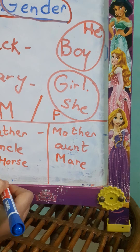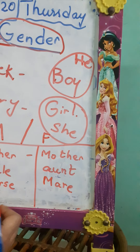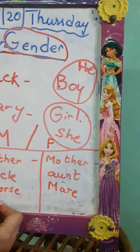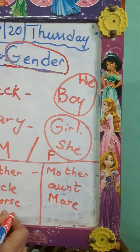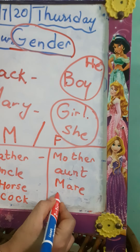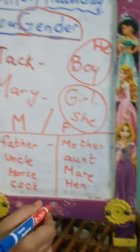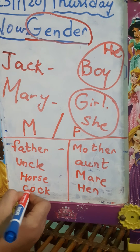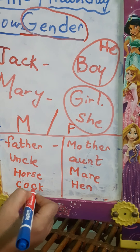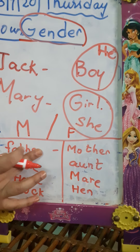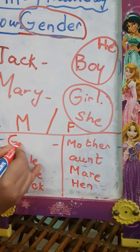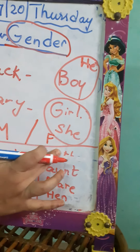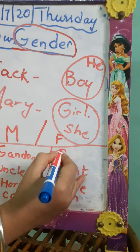Next is goose. Peacock — the masculine is cock and the feminine is hen. Gander is male. Gander — goose.